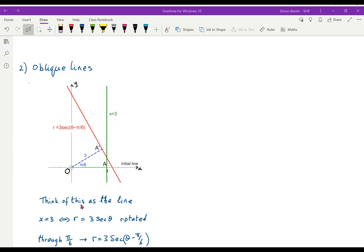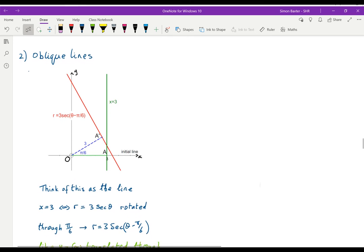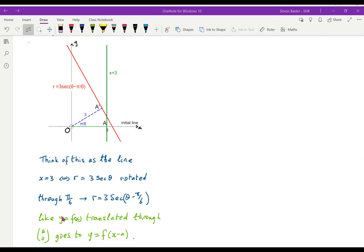So the way that I like to remember these is to think of the line x equals 3 is r equals 3 sec theta, which we've just met. If we rotate it through pi by 6 about the origin, we get r equals 3 sec theta minus pi by 6. This is just like your original ideas with translations. That if you have y equals f of x and you translate it through a 0, that goes to y equals f of x minus a. So when you're dealing with Cartesian coordinates, you're familiar with a translation. When you're dealing with polar coordinates, the equivalent to a translation is a rotation. And it behaves in the same way. R equals f theta is mapped onto r equals f theta minus pi by 6. Nice little idea. And it does help you remember the equation and what it means.